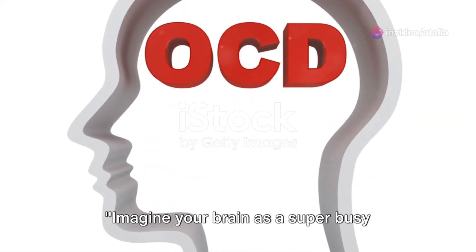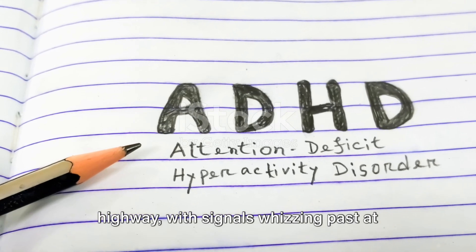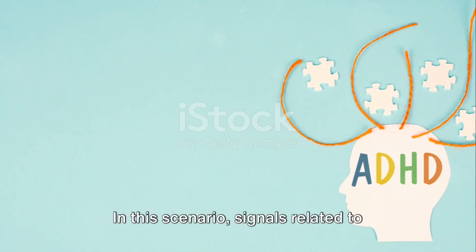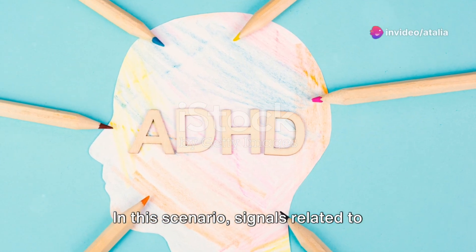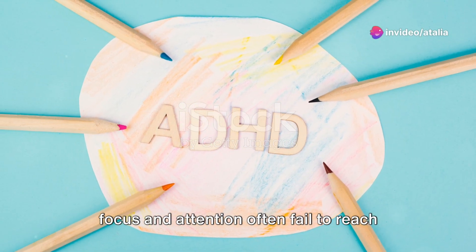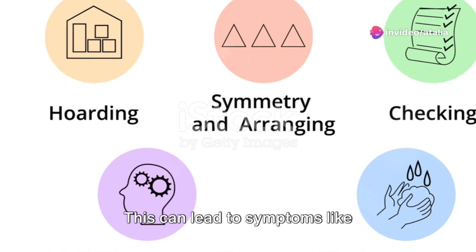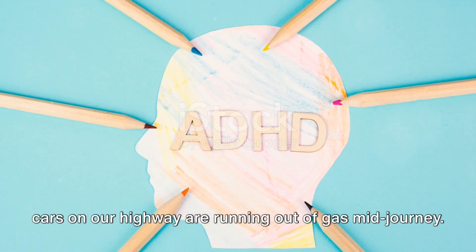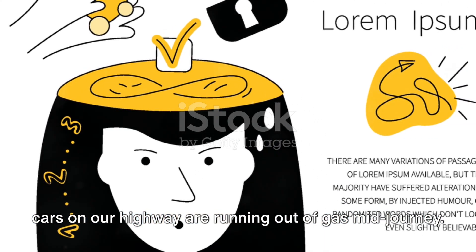Imagine your brain as a super-busy highway with signals whizzing past at breakneck speed. Now, let's consider ADHD. In this scenario, signals related to focus and attention often fail to reach their destination. This can lead to symptoms like impulsivity and inattention, as if some cars on our highway are running out of gas mid-journey.